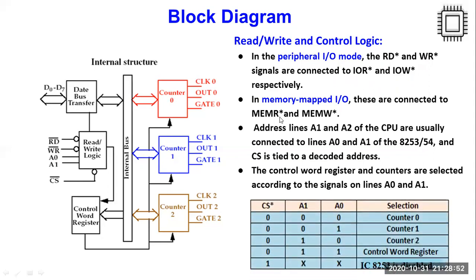The next important block on your system would be these counters. Before looking into the counters, let us see what would be the conditions of select lines, or you can see the chip select signal, and A0, A1 address lines of this 8253 IC.